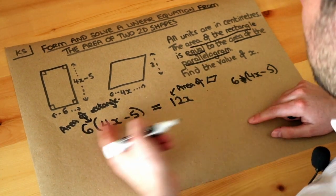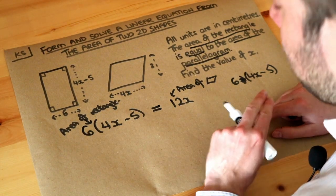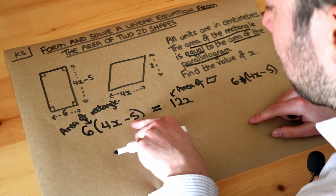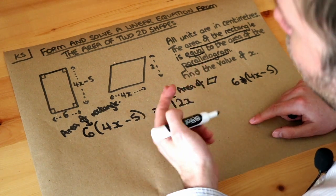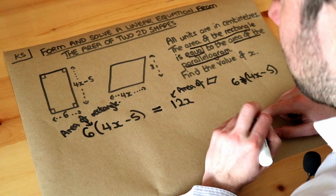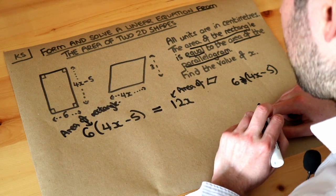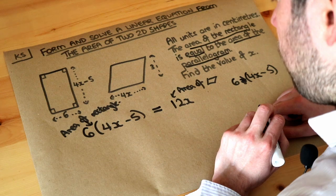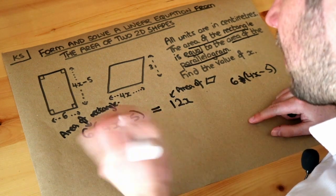And now we've got a linear equation which we can solve. It's called a linear equation, by the way, because we've got x terms and we've also got constants without the x. But you don't have any x squared or x cubed terms or more complicated things like that. So how do we solve this equation? Well, we could expand the brackets out first and get everything out into the open.